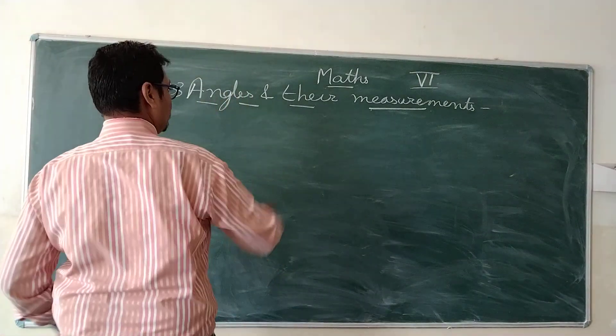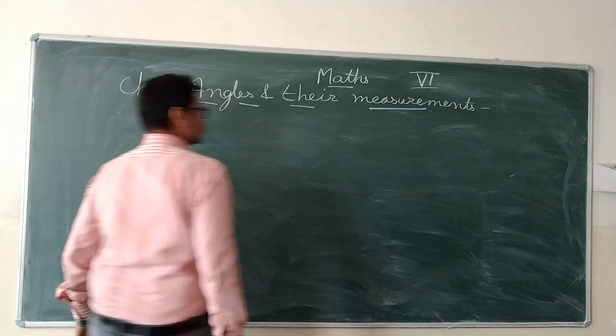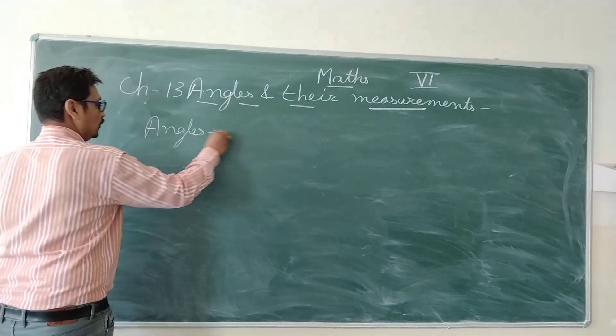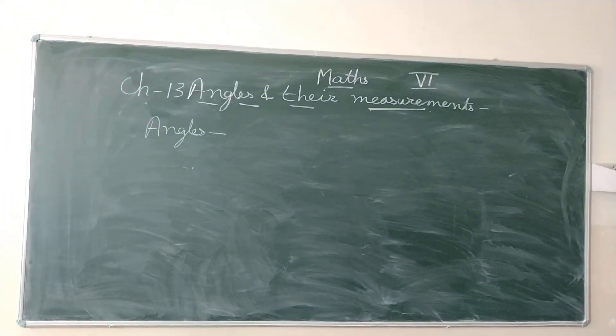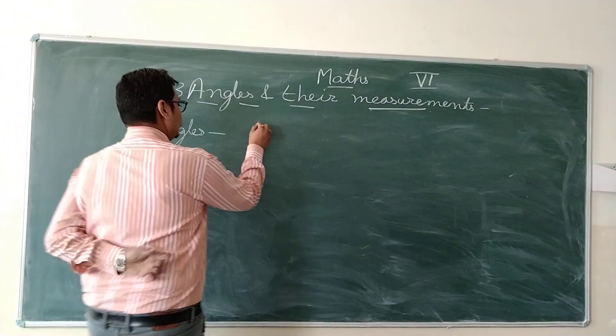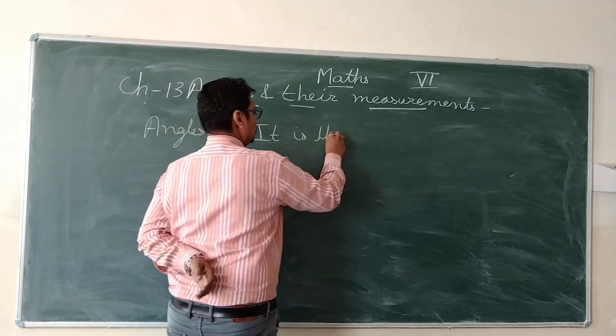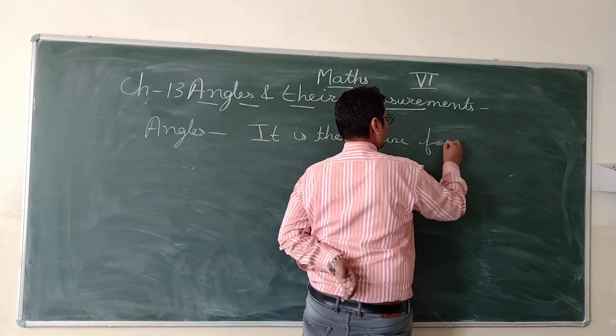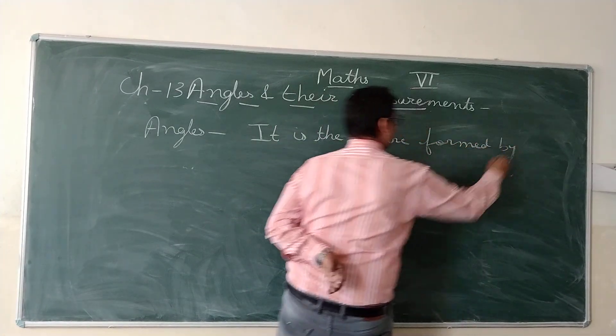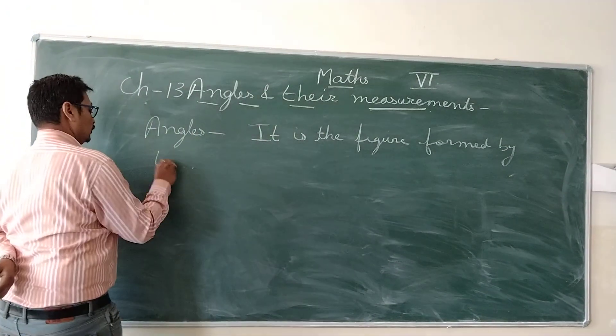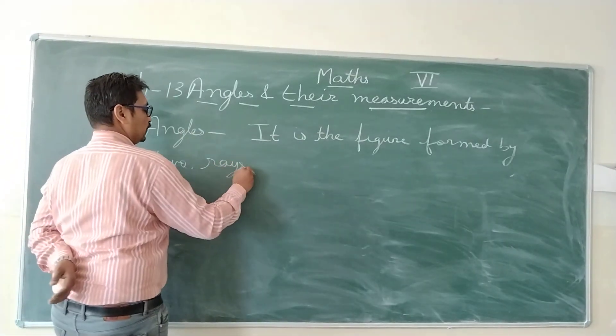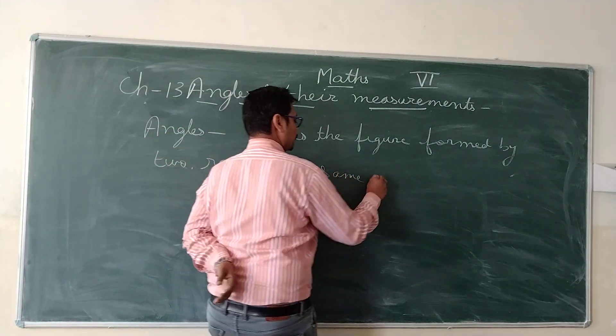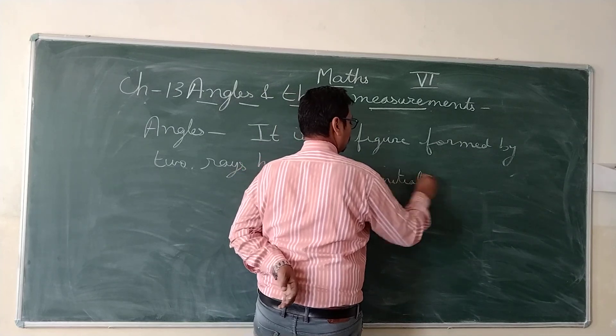Chapter number 13: Angles and their measurement. So first of all, what is the meaning of angle? It is the figure formed by two rays having same initial point.